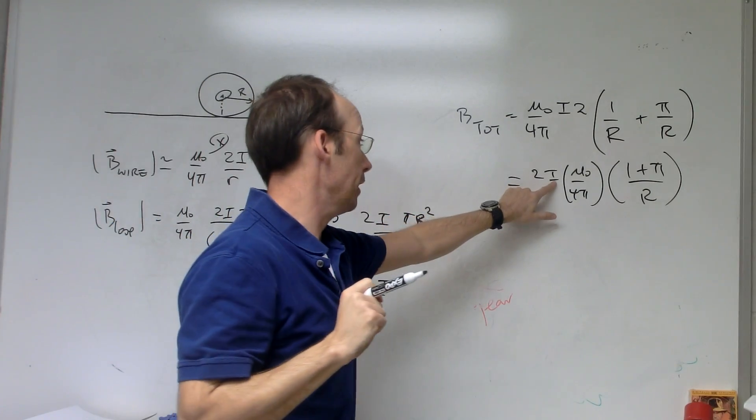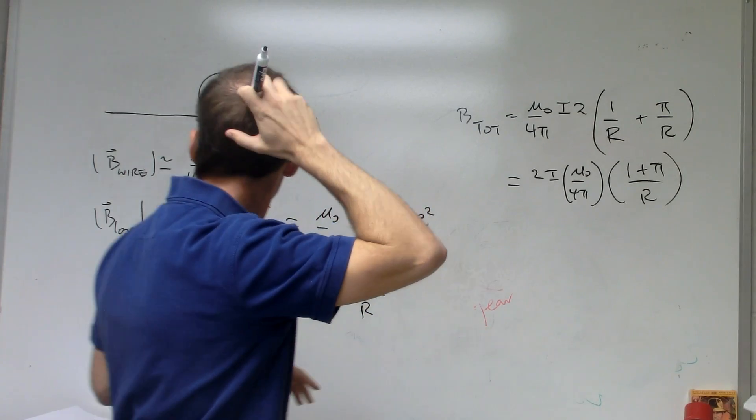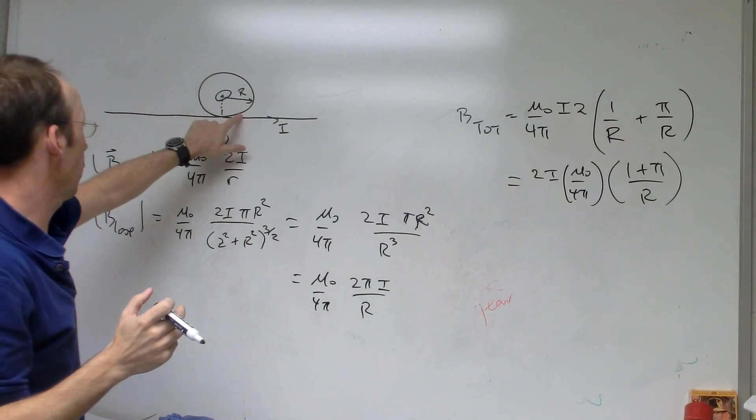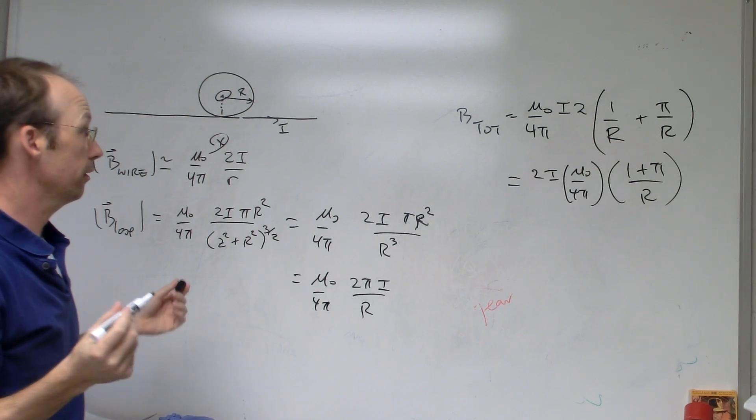As you increase the current, the magnetic field goes up. That's good. For a bigger loop, we're getting further away from this wire, so it would be a smaller current. That's it.